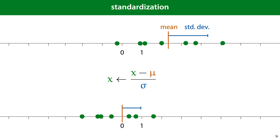You can visualize this by thinking of the data as being shifted uniformly to the left and then divided by the standard deviation to shrink the extent of the data. In essence, we are transforming our data so that it looks like it was sampled from a standard normal distribution, as much as we can with a one-dimensional linear transformation.